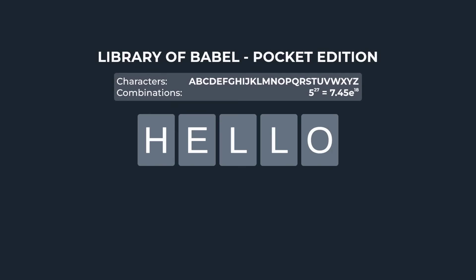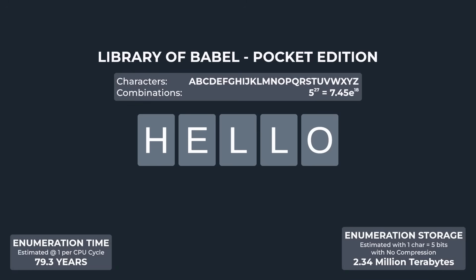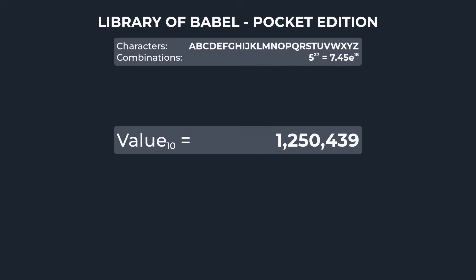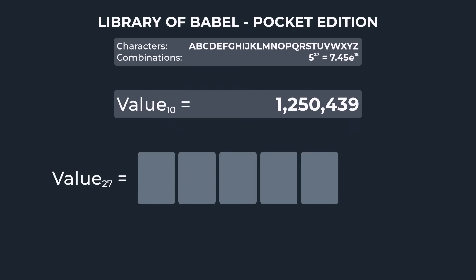So we need a deterministic way to navigate to a particular place in the library. One option would be to enumerate all combinations and simply index to the location, but since there are nearly seven and a half quintillion of them, that may take a while and would also take an enormous amount of storage. Another option is to use numerical decomposition: instead of generating each of our five character values independently, we can generate all characters together and decompose that value into each of the five characters. Since each member of this library is unique, we can choose a random number between 0 and the total number of combinations — each of these numbers represents one location. Then we convert it into base 27 and then into our characters. Bingo!